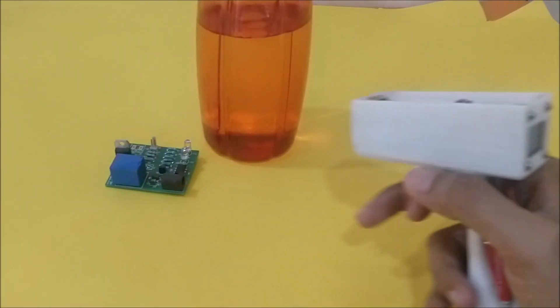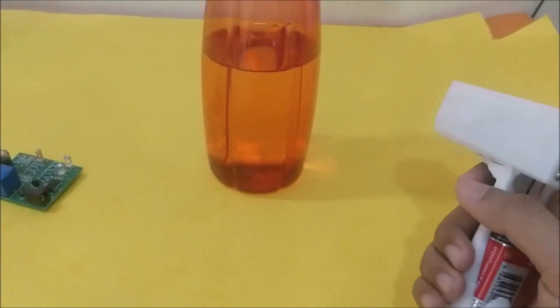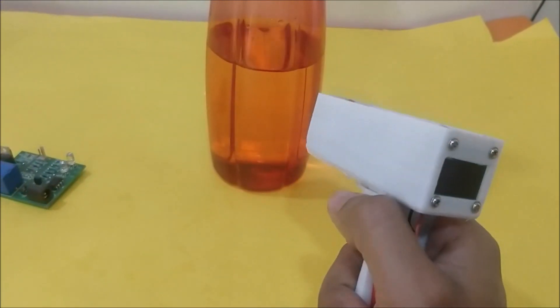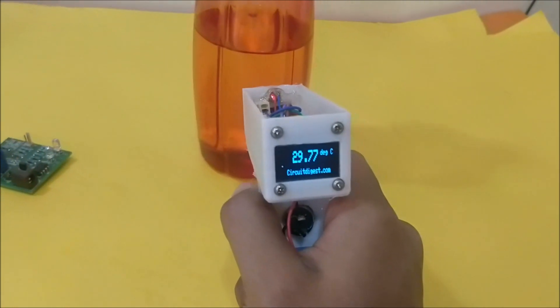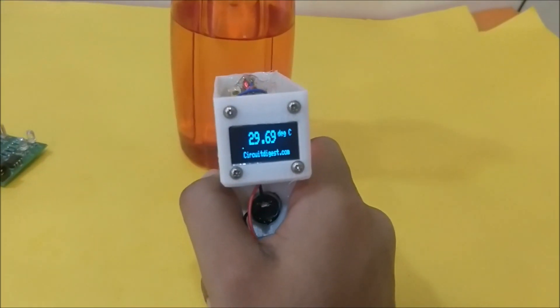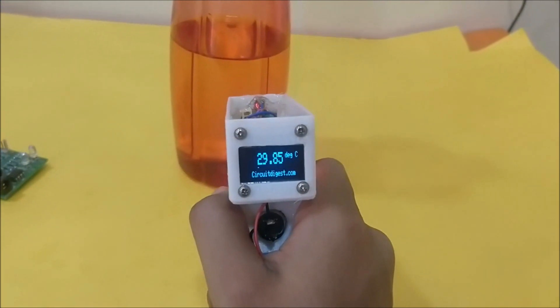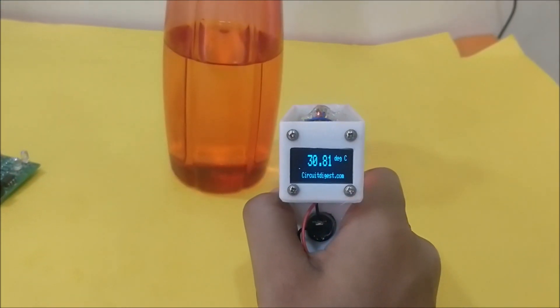If we measure the temperature of this water bottle, it shows 29.7, which is relatively colder than the sheet that's over here.